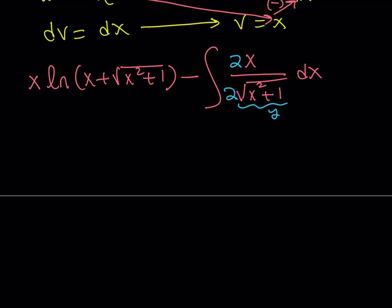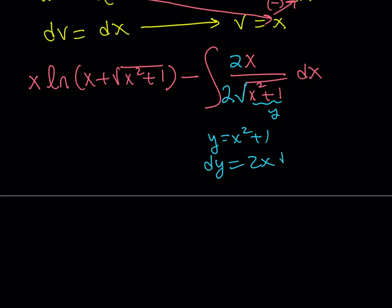What you notice is that you're basically getting something like — if you call this y — you can differentiate it and get something interesting. I'm calling this expression x squared plus 1, without the square root, as y. So y equals x squared plus 1, and from here dy is going to be 2x dx. We're getting an extra one-half, but that's okay, we can just pull it out.